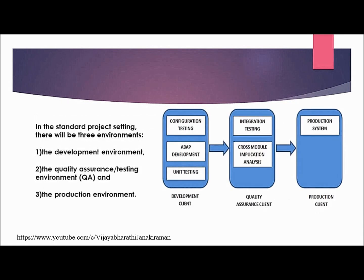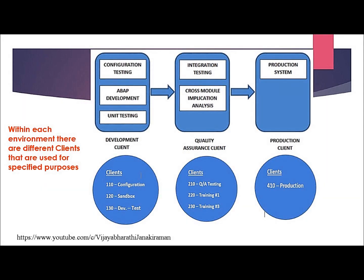In any SAP project, there must be a minimum of three environments: the development environment, the quality assurance or testing environment, and the production environment. There are different clients used for specified purposes. Under the development environment you can have three clients, under quality assurance you typically see three clients, and the production environment has one client.